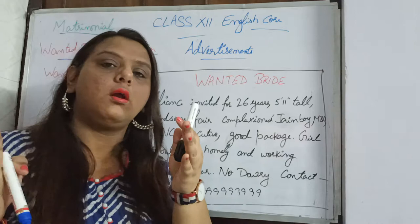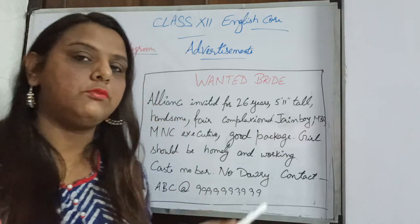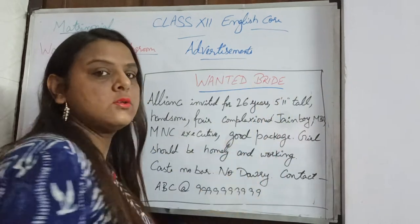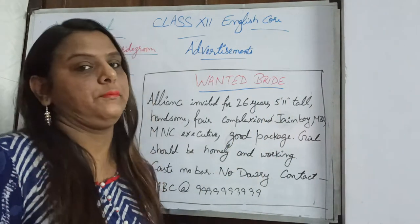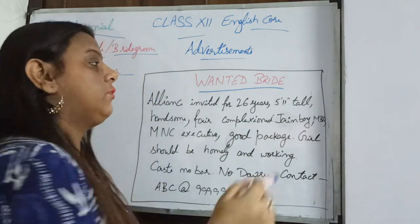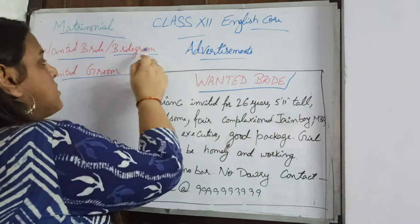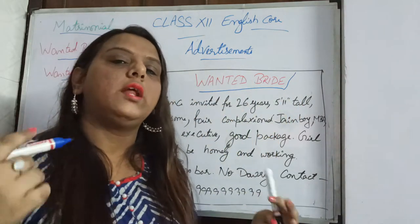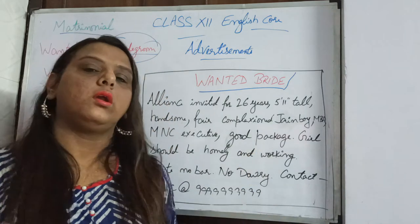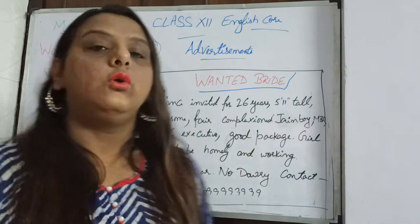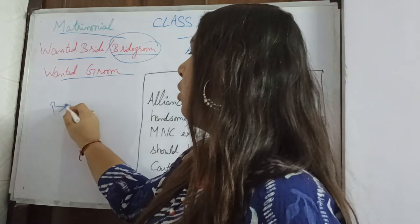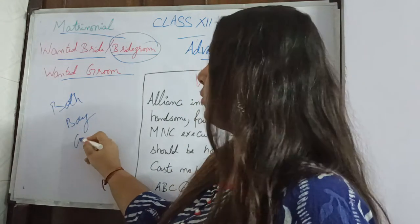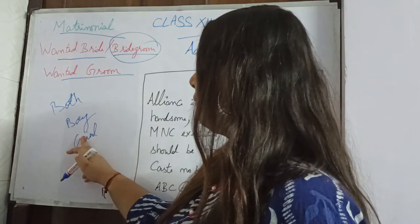So here, your brother requires a girl for marriage — the heading is 'WANTED BRIDE,' written in capital letters and centered. You could also write 'WANTED BRIDEGROOM' as I have mentioned. Now remember one more thing: whatever ad you are writing for matrimonial — either for a girl or for a boy — you need to mention the details of both the boy as well as the girl.